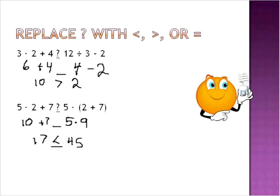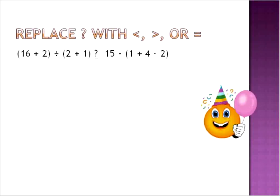And 45 in this case is greater than 17. In other words, 17 is less than 45, so the symbol that would go in there is less than. That's the way that we compare these expressions when they're written in that way.